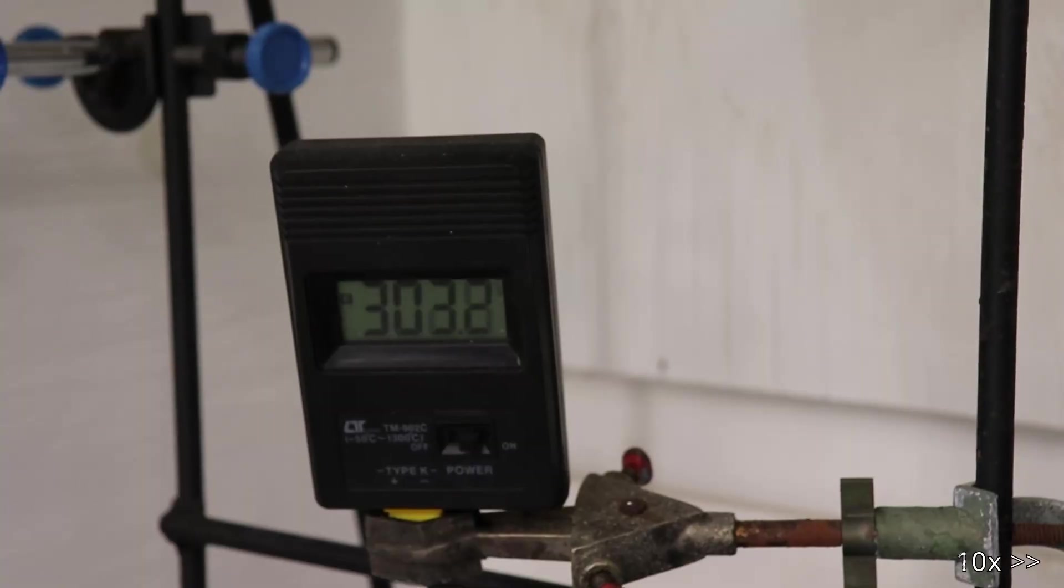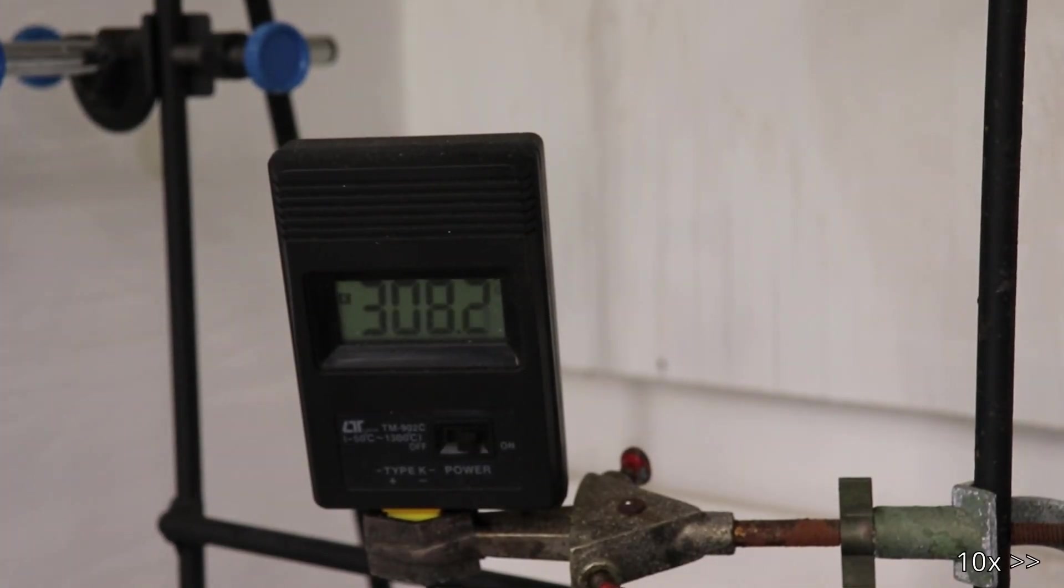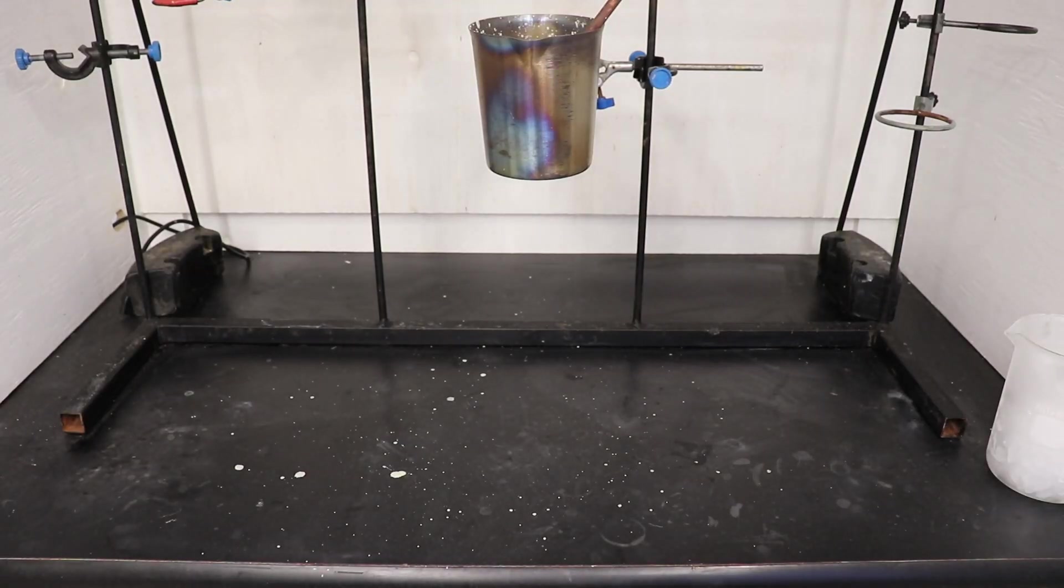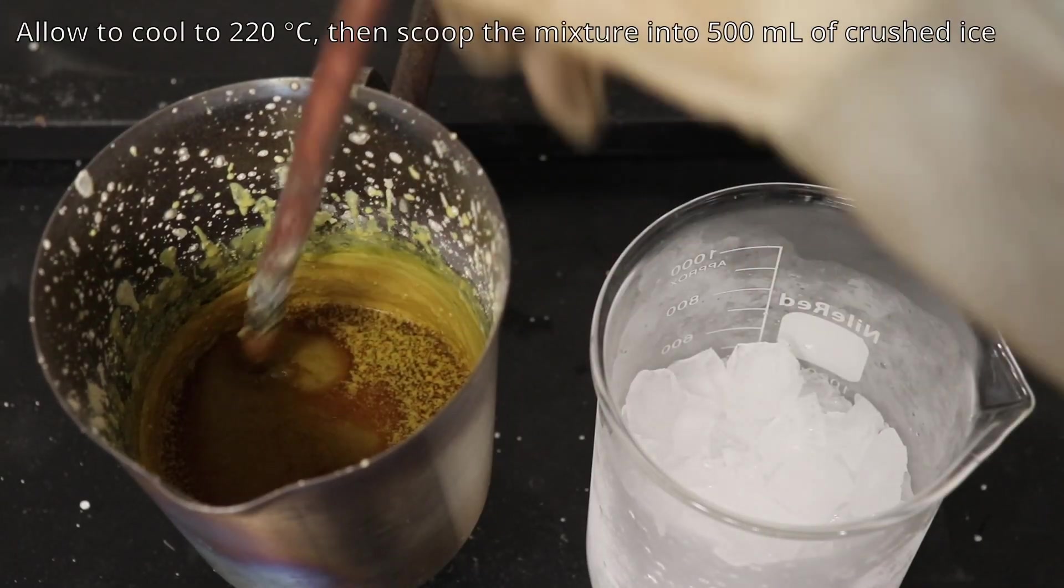Now you don't want to have any exposed skin while running this reaction because it loves to spit out molten alkali, as you can see by all the splatter on the bench. And you really don't want to get caustic burns from 300 degree molten potassium hydroxide.